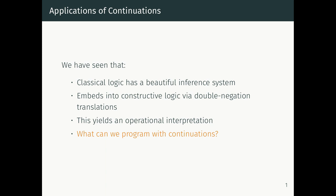Now that we have this property that classical proofs can be read as having an operational interpretation, the natural question is: what can we program with continuations? Remember from the very beginning of the course, the sales pitch is that types have a dual life — both as a logical concept and as a programming concept. We've seen the logical concept for negation and continuations. Now how can we program with continuations?